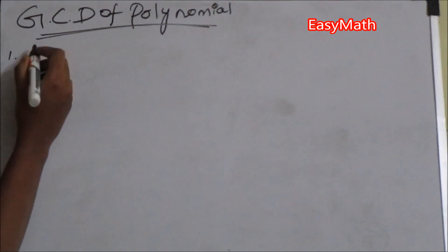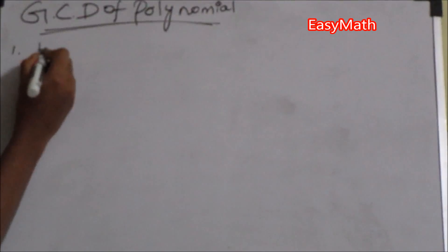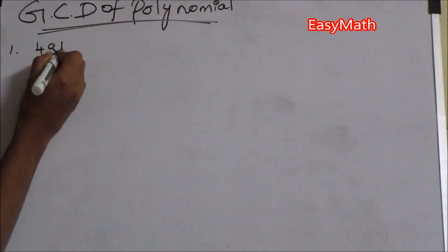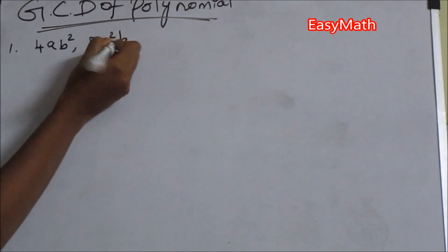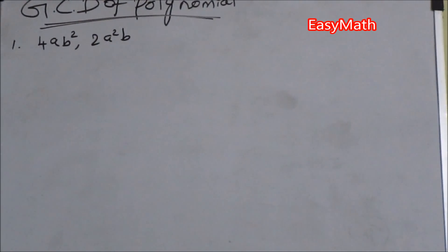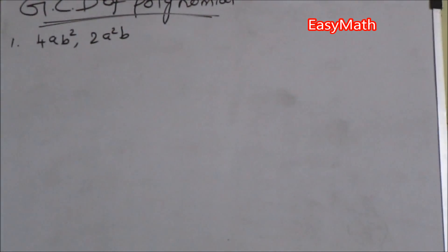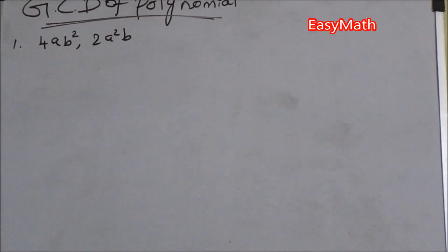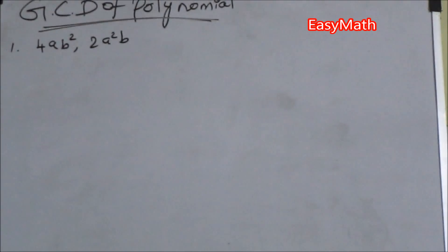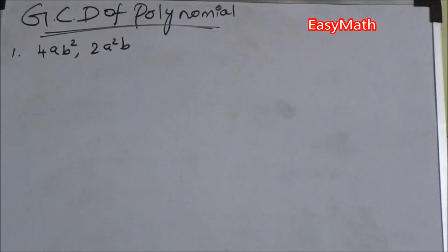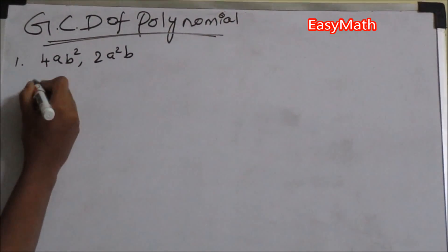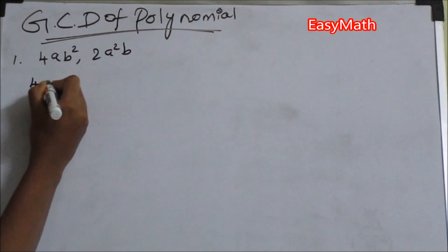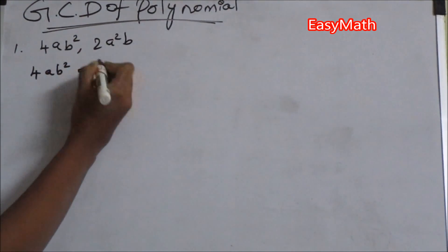We will take the polynomials 4ab² and 2a²b. We are going to find the GCD of this given polynomial, so let me expand it first.